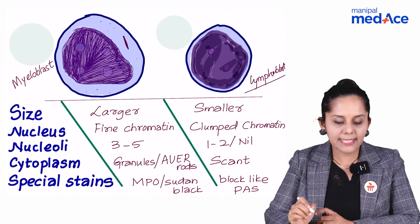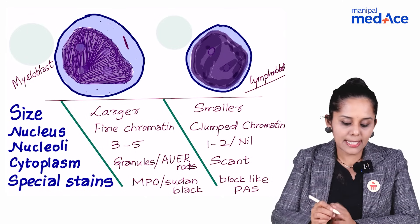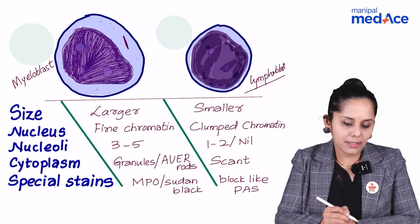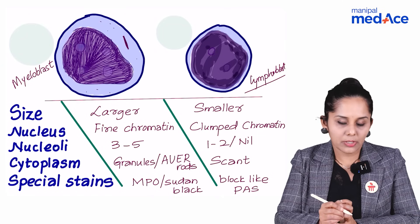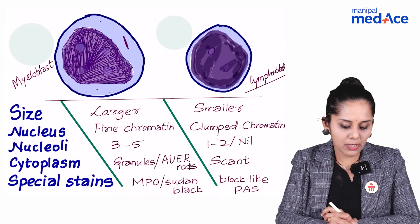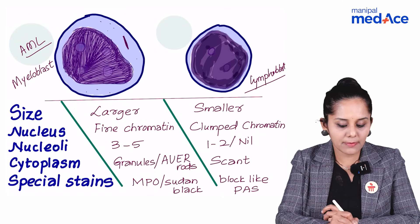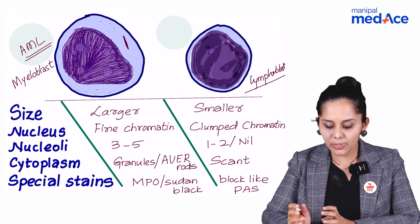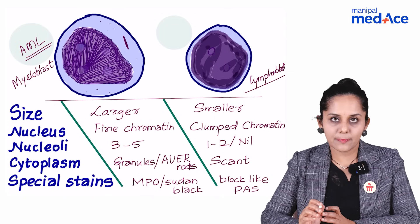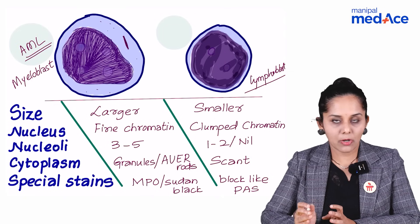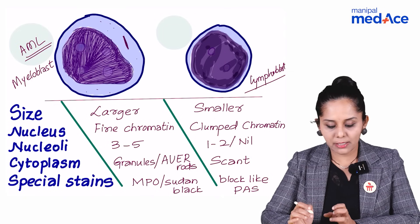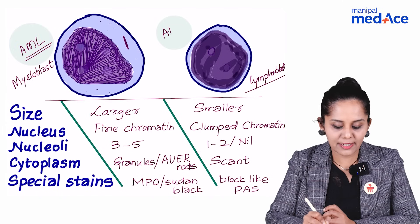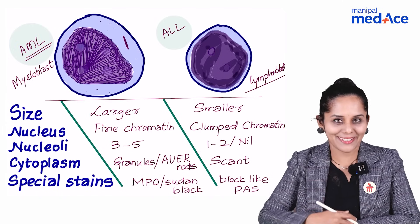So remember these differences. Myeloblasts proliferate in a hematologic condition called acute myeloid leukemia, where the percentage is 20% or more, and lymphoblasts proliferate enormously in a condition called acute lymphoblastic leukemia.